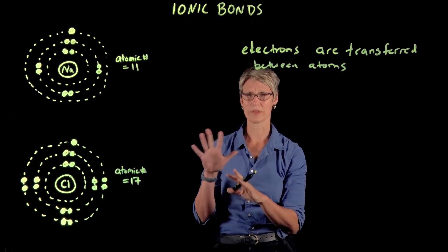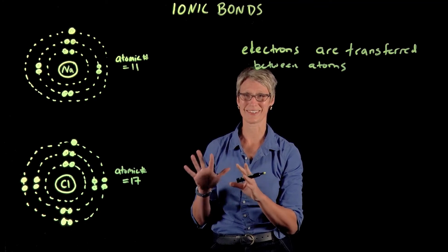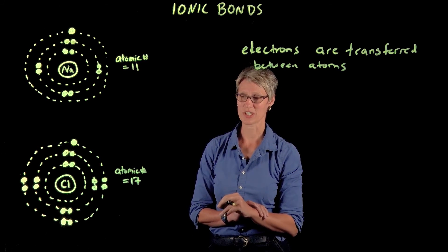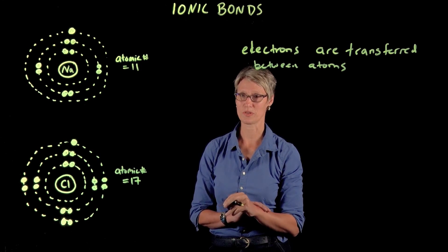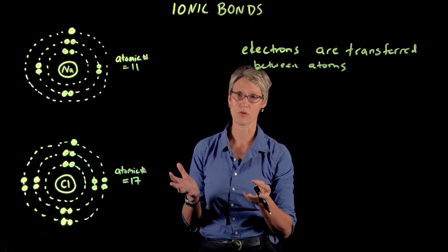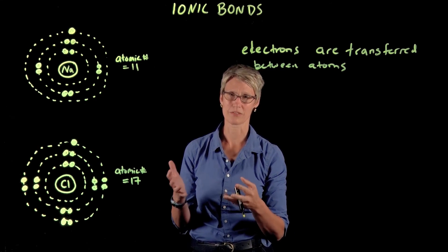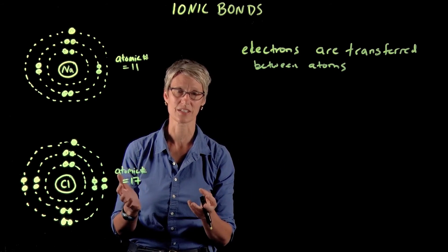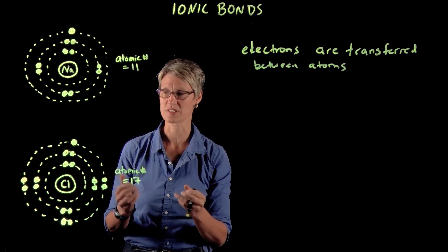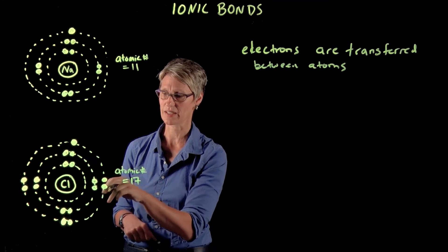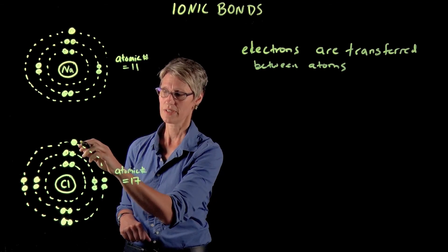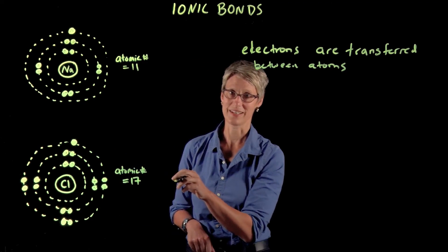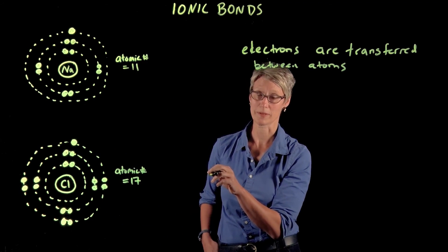The orbitals in shell 3 are a little more complicated than in shells 1 or 2, but there are essentially four orbitals that are lower energy, so that shell is considered at a stable state when it has eight electrons. Chlorine has seven of the eight and is just missing one.